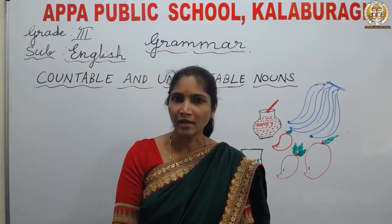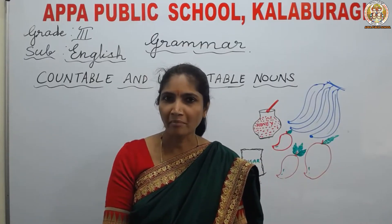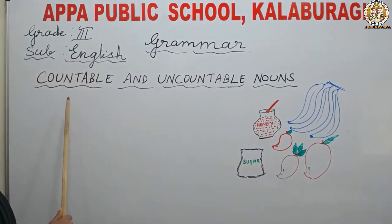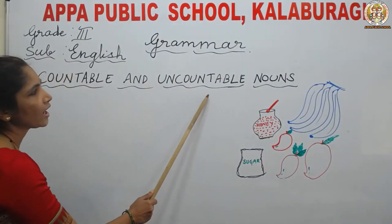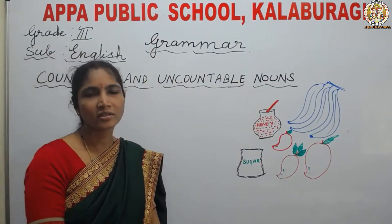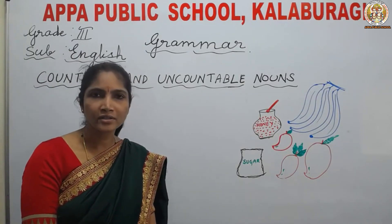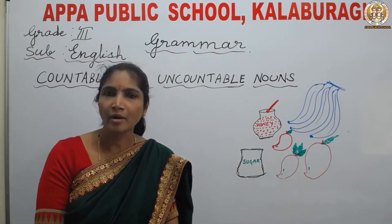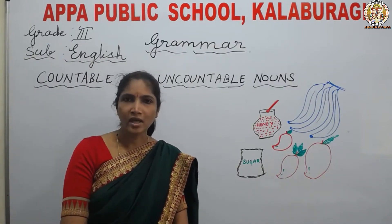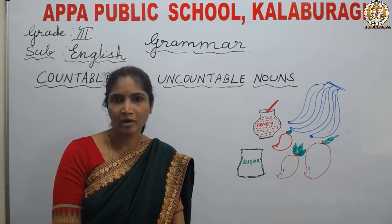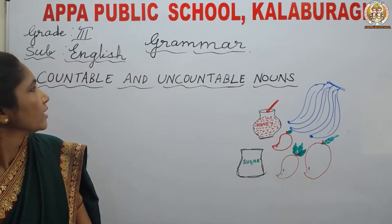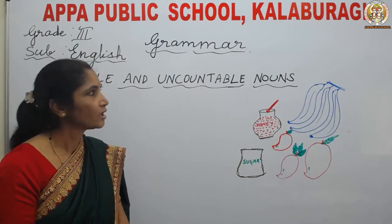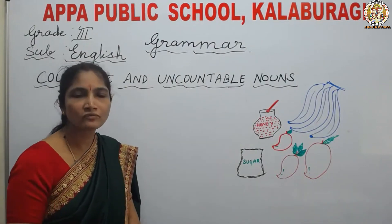Today we are going to learn about one of the topics, that is countable and uncountable nouns. Before that, everybody, all of you have learned about nouns — the meaning of noun, common noun, proper noun — from the Kidvento video. Today we will see about countable and uncountable nouns. The meaning is very simple: countable nouns means the nouns which we can count, and uncountable means which we cannot count.